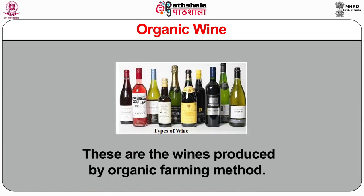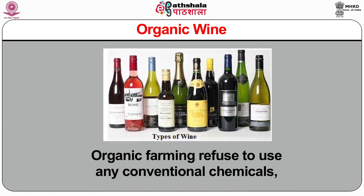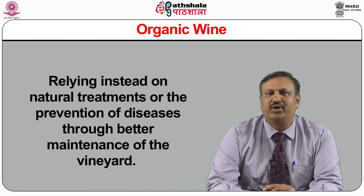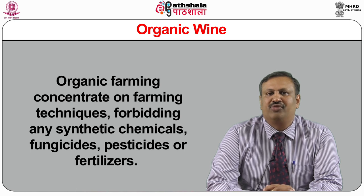Generic wines are wines named after long-established European areas. Many North American and Australian wines are labelled as Clarets, Burgundy, Chablis, Chardonnay, Graves, Hock and even Champagne. A generic wine should possess the distinctive color, flavor and aroma of its own. Organic wines are produced by organic farming methods which refuse to use any conventional chemicals, relying instead on natural treatments or the prevention of diseases through better maintenance of the vineyard. Organic farming forbids any synthetic chemicals, fungicides, pesticides or fertilizers, and concentrates on ensuring soil fertility by maintaining biological activity within it.